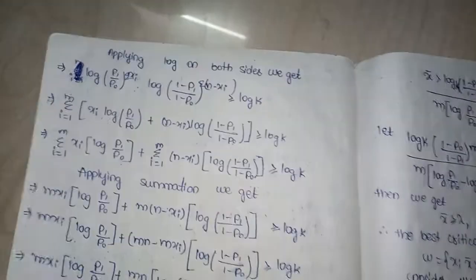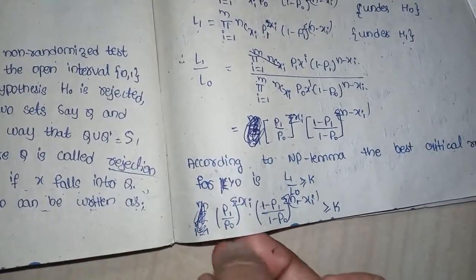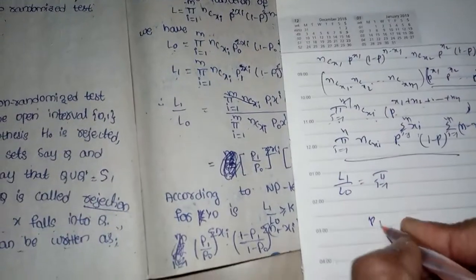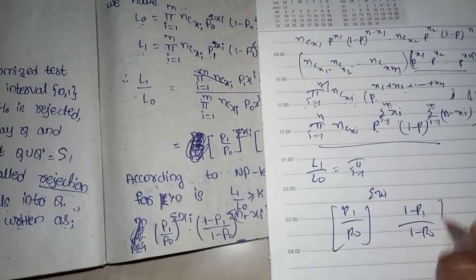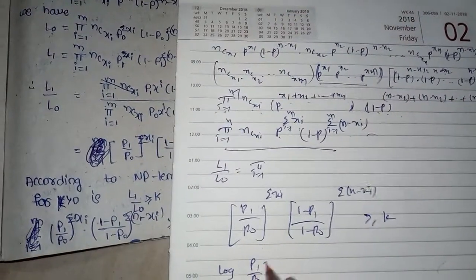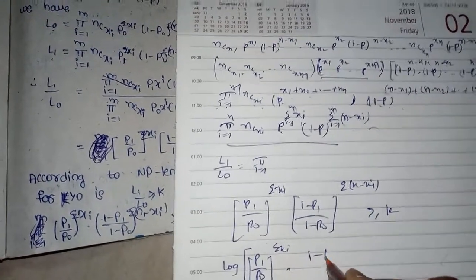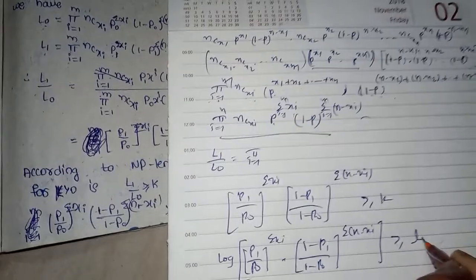Applying log on both sides: log[(P1/P0)^(summation X_i) * ((1-P1)/(1-P0))^(summation(N-X_i))] >= log K. This gives: summation(X_i) * log(P1/P0) + summation(N-X_i) * log((1-P1)/(1-P0)) >= log K.